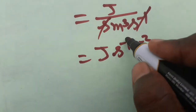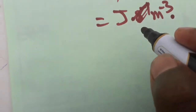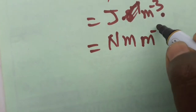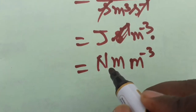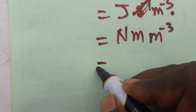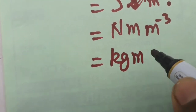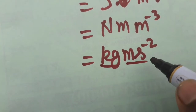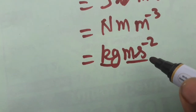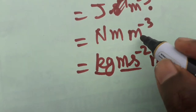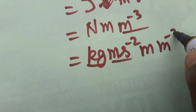Now joule equals newton × meter, and meter⁻³ is still there. One newton is force, which equals mass × acceleration, so newton = kg × meter × second⁻². Acceleration is meter per second squared, and there is one more meter from joule.